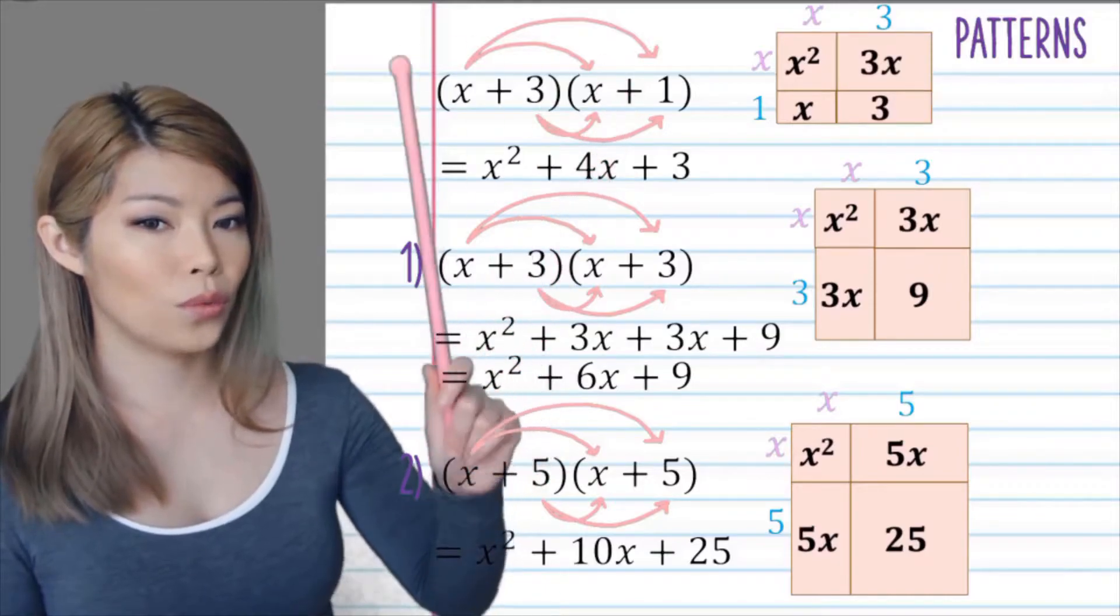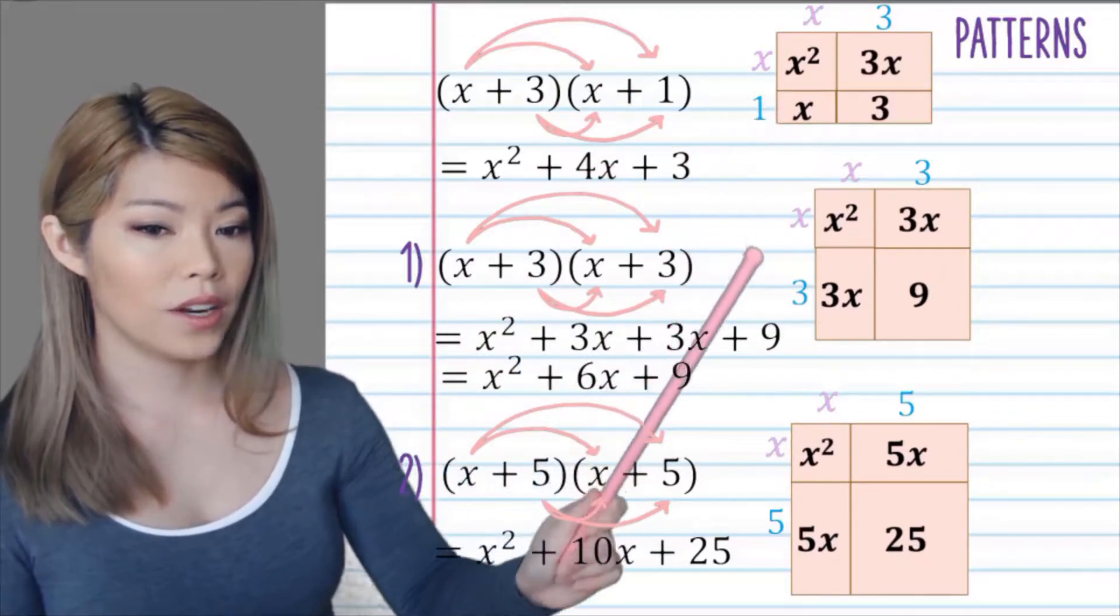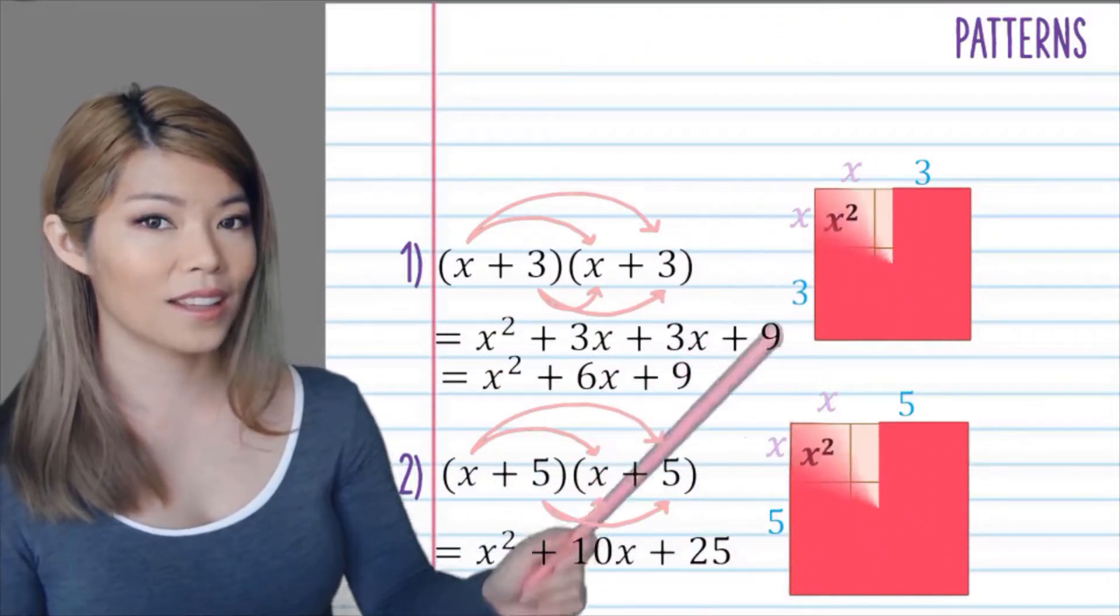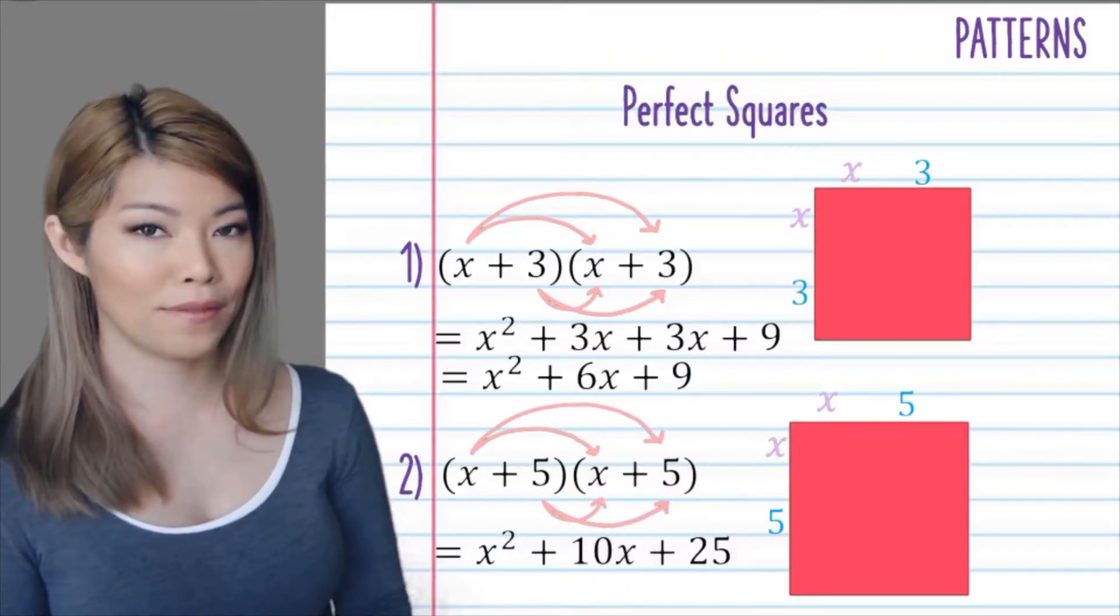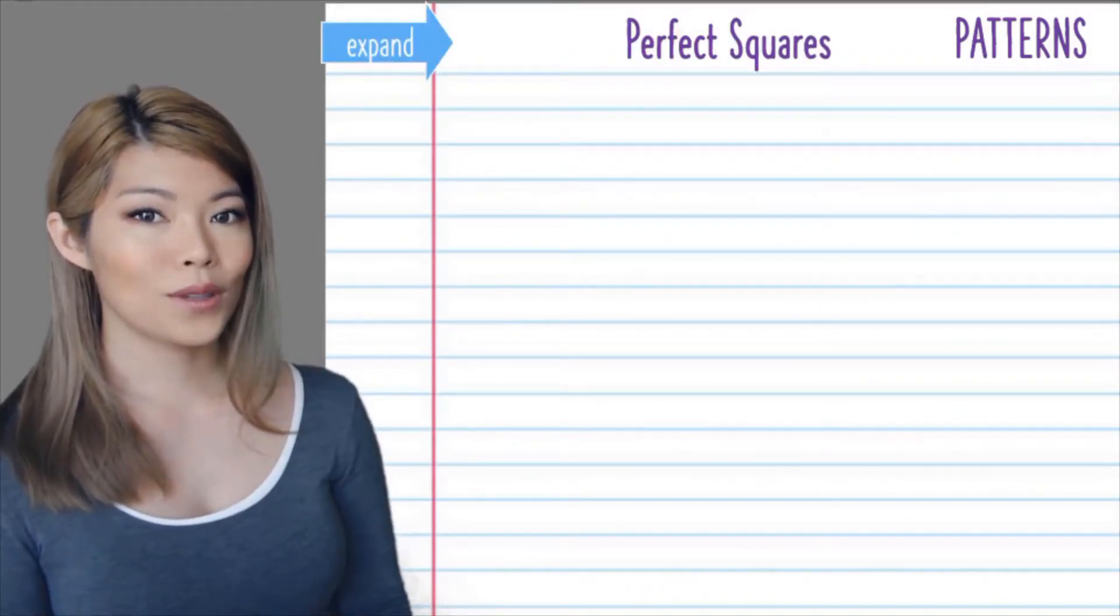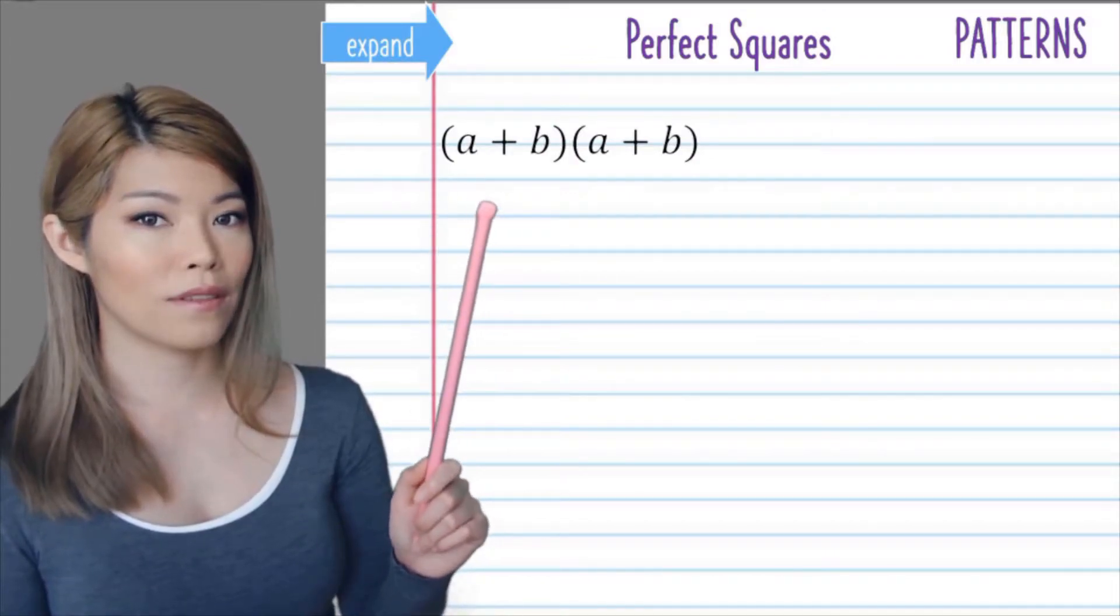Now this pattern did not work for that rectangle over there. It only worked when the shape is a square, and we call this pattern perfect squares.